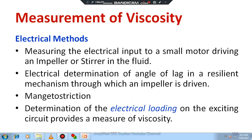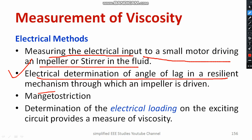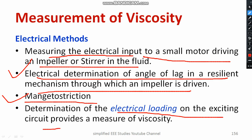There are also a few electrical methods for measuring viscosity. One involves measuring the electrical input to a small motor driving an impeller stirring the fluid. Another is the electrical determination of the angle of lag in a resilient mechanism through which the impeller is driven — the impeller is coupled with the motor. A further method involves magnetostriction, which will be covered in a separate topic. Additionally, there is determination of electrical loading on exciting the circuit provided for measuring viscosity.